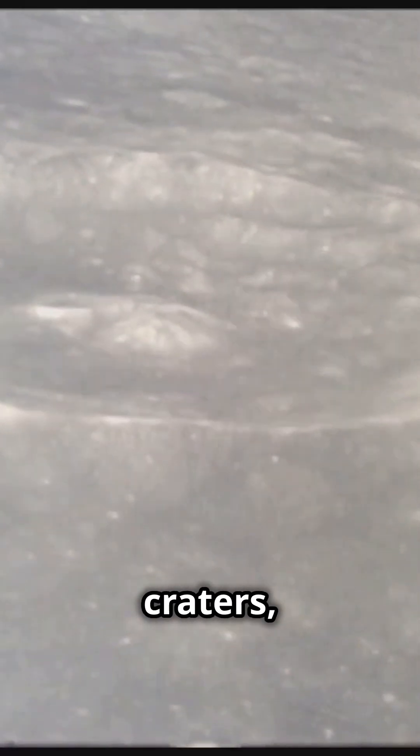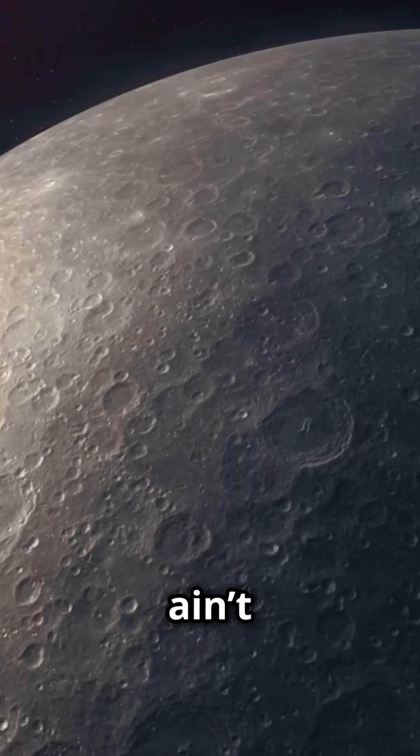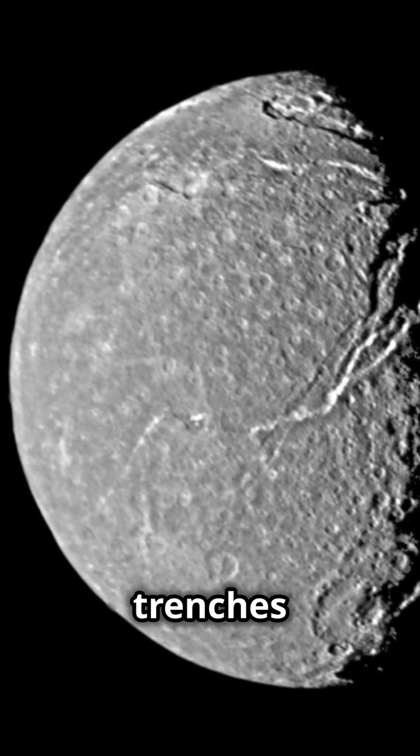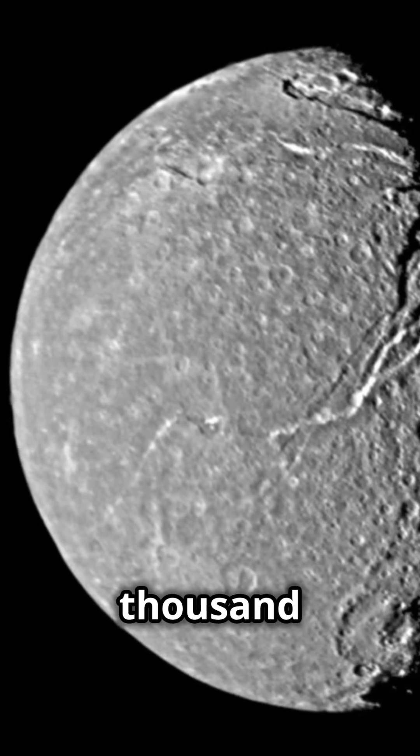We're talking bright impact craters, some up to 30 miles wide, but that ain't all. Titania's got deep trenches and a fault line stretching about a thousand miles.